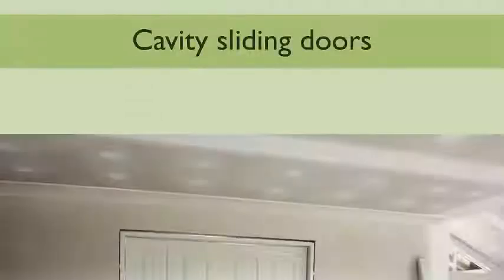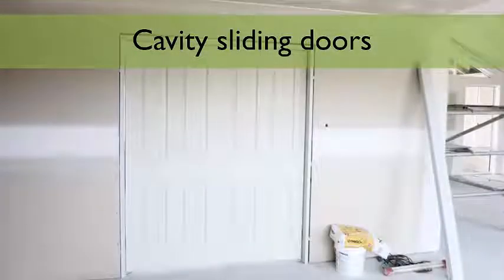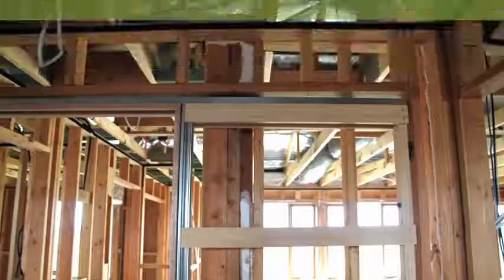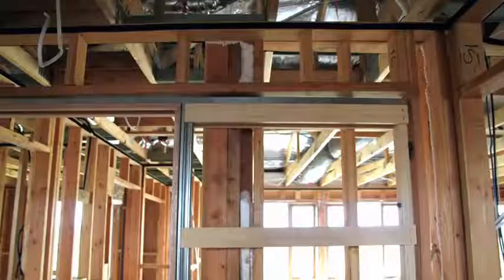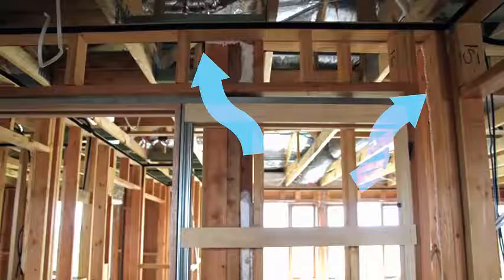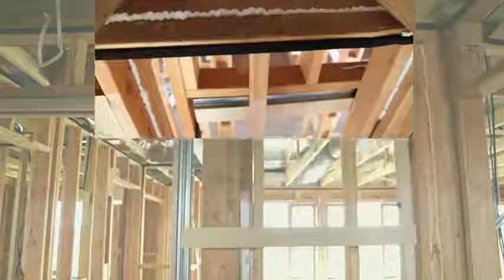Typically located within an internal wall, cavity sliding doors are installed during the framing stage, and in many cases they create an open air path to the ceiling space or external walls. You can either install weather strip at the top and sides of the cavity, or seal all gaps between the stud work and the header to resolve the issue.